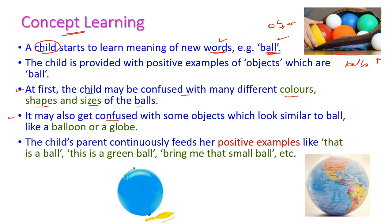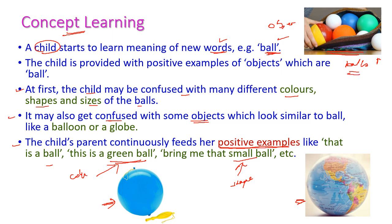The child may also get confused with some objects similar to balls, like a balloon or a globe. The child will confuse balloons and globes because the size is similar to balls. So the parents — that is, the child's parents — continuously feed positive examples to that child. Positive examples means more number of balls. That is: this is a ball, this is a green color ball. Here they introduce color, and the ball is small, so here they introduce shape. The child will learn which is exactly the ball and can easily differentiate it from balloon and globe.